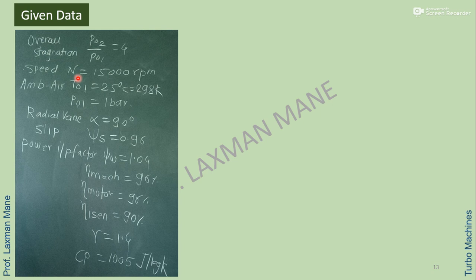Given data: overall stagnation pressure ratio, speed, ambient air conditions (total values at inlet), radial vanes meaning alpha equals 90 degrees, slip factor, power input factor, mechanical efficiency, motor efficiency, isentropic efficiency, adiabatic index, and value of Cp.